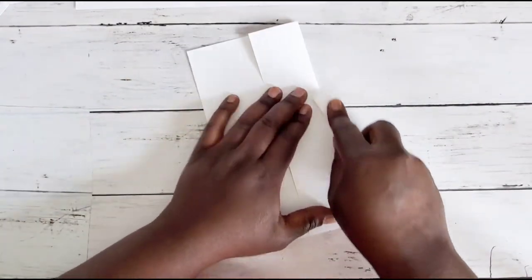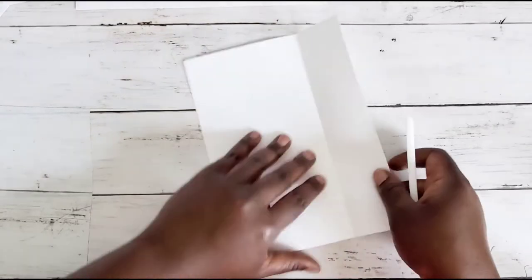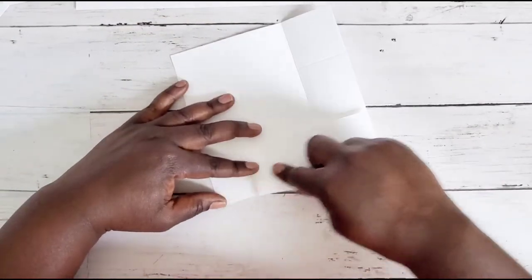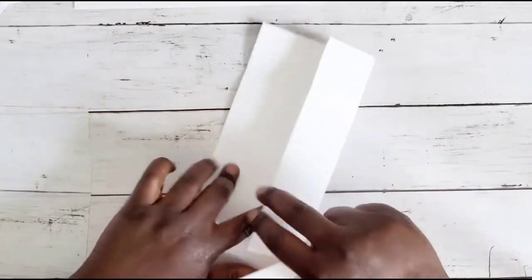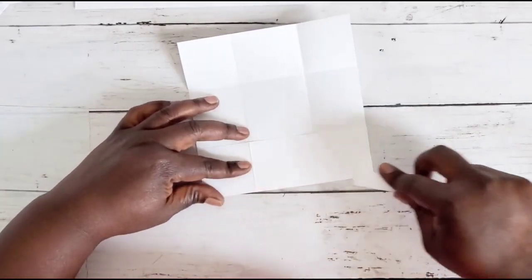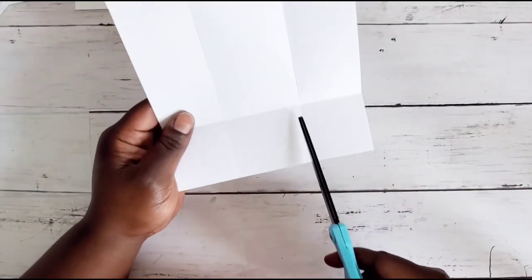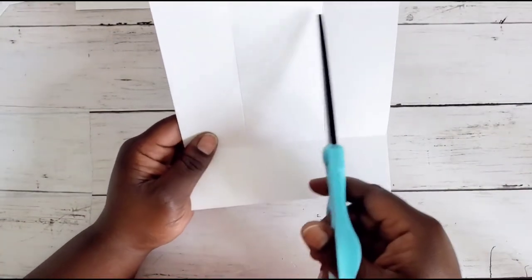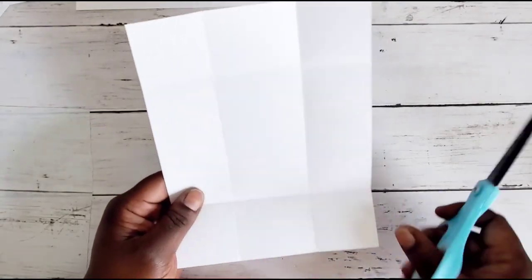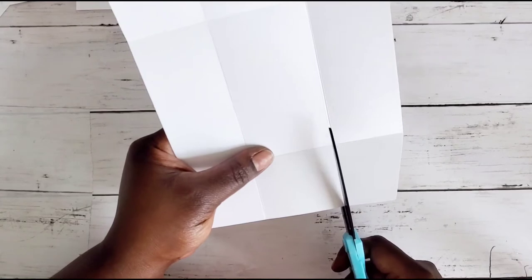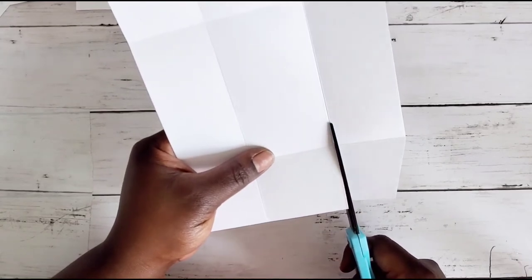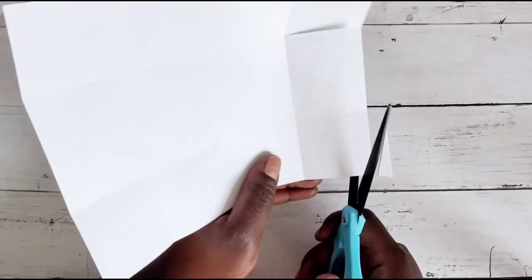Then you're going to take your scissors and you're going to cut up the squares up to the score line on all four squares. And I always do the pinwheel motion, but you can do however you want to create your box.